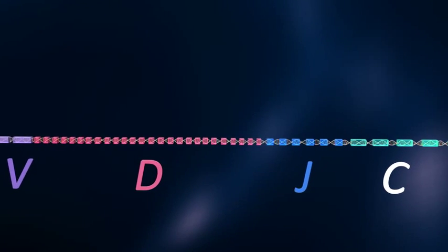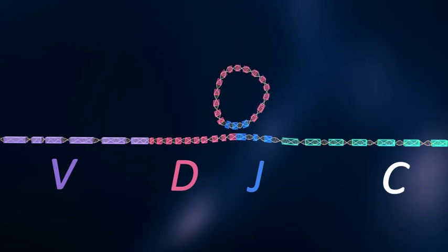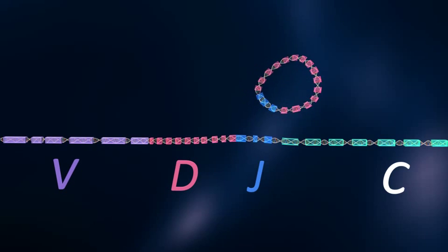First, one D gene segment merges with one J gene segment in a random fashion and the intervening gene segments are discarded.